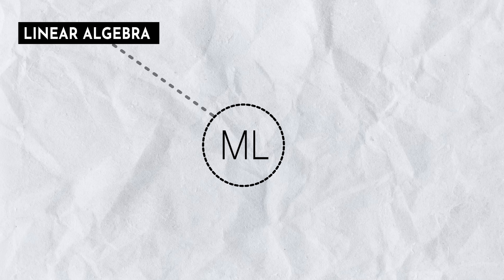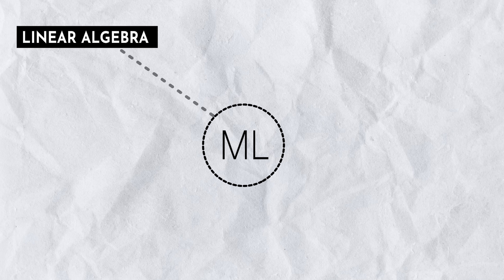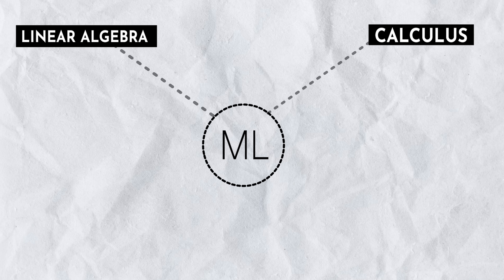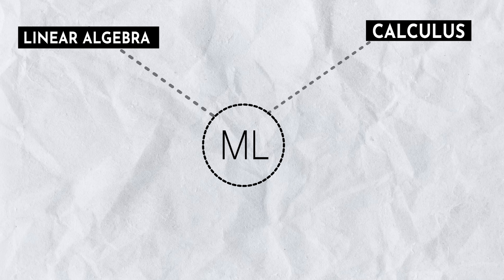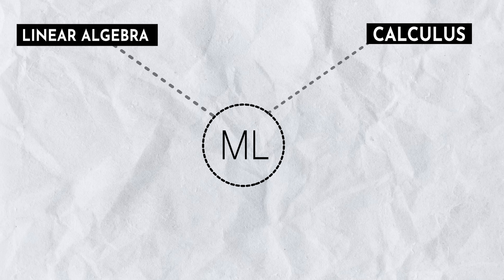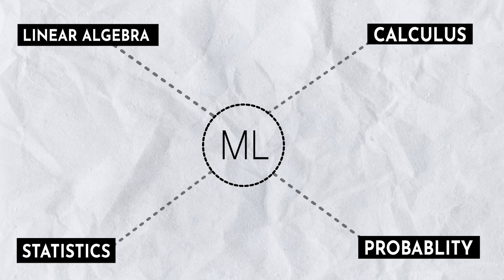Mathematics is very important if you want to truly learn data science and machine learning. You may think mathematics is hard, but the math of machine learning is quite easy and very interesting — you don't need to be good at numerical calculations. I recommend three branches: linear algebra, which deals with storing and manipulating data; calculus, which is used for optimization and algorithm learning; and statistics and probability, for estimation and inference.